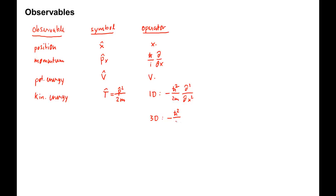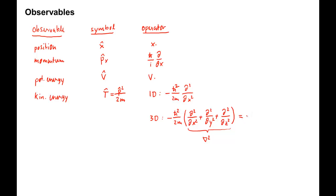In three dimensions, the kinetic energy is minus h-bar squared over 2m times the sum of the second derivatives: d²/dx² plus d²/dy² plus d²/dz². This expression is often written as the nabla squared operator, so the kinetic energy operator looks like minus h-bar squared over 2m times del squared.